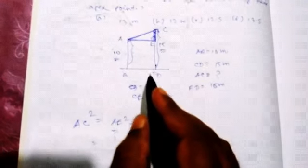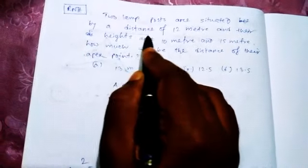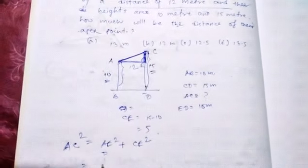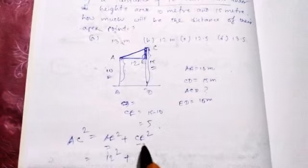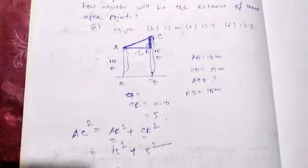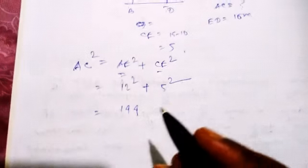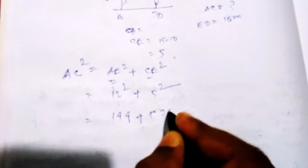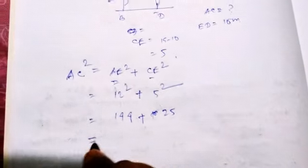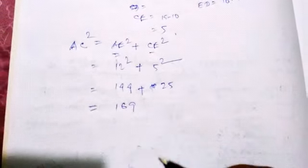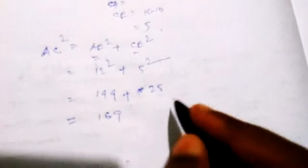AE equals 12, the distance of 12 meters. So AE is 12 square plus CE is 5 square. That will be 144 (12 square means 144) plus 5 square means 25. By adding these two numbers, we get 169.